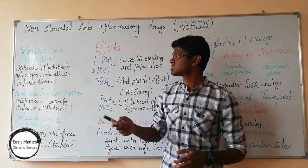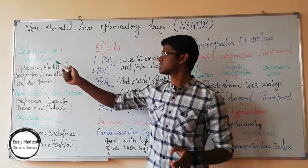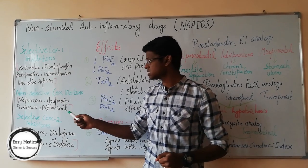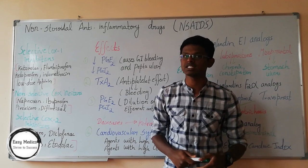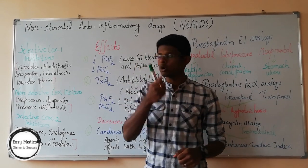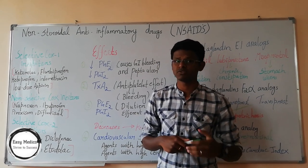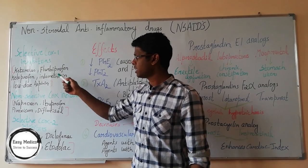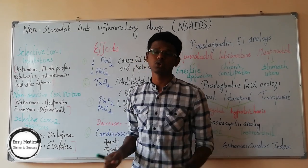Now, based on their inhibition, NSAIDs are classified into various types. First, they are classified into selective COX-1 inhibitors, non-selective COX inhibitors, and selective COX-2 inhibitors. Selective COX-1 inhibitors include ketorolac, flurbiprofen, ketoprofen, indomethacin, and low-dose aspirin.